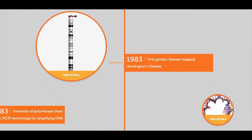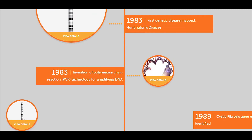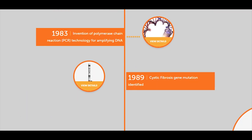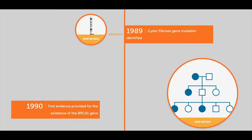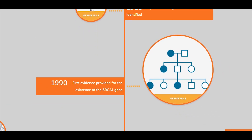In 1983, the first genetic disease was mapped in Huntington's disease. Also in 1983, the invention of polymerase chain reaction, PCR technology, was developed for the amplification of DNA — which today we use for the diagnosis of COVID-19 and SARS coronavirus.